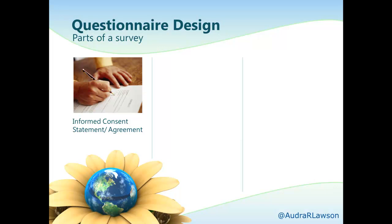Good informed consent statements include: first, a brief statement of who you are and that you're a credible researcher; second, the purpose of the questionnaire; third, what's involved on their part; fourth, any risks, costs, or rewards for the participant; fifth, how the results will be used; sixth, emphasizing that participation is voluntary; and seventh, other details such as how to raise complaints, how to obtain results, and contact information — whatever gives respondents a reasonable sense of informed consent.